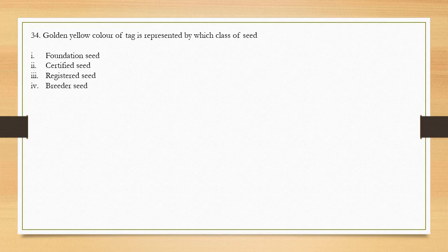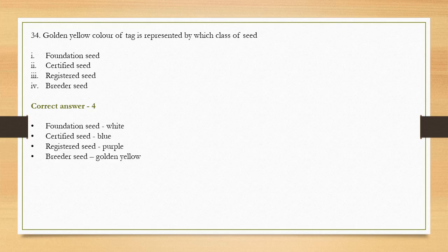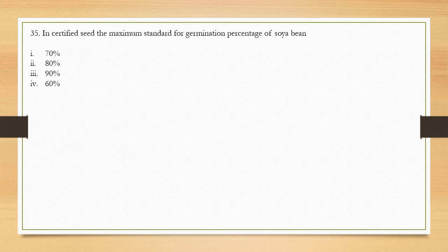Question number 34: Golden yellow color of tag is represented by which class of seeds? We represent seed classes with colored tags. The options are certified seed, foundation seed, registered seed, and breeder seed. The correct answer is option 4 — breeder seed has a golden yellow tag. Foundation seed tag is white, certified seed has a blue tag, and registered seeds have a purple tag.